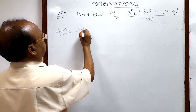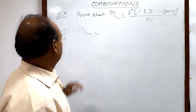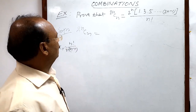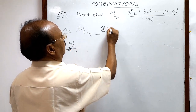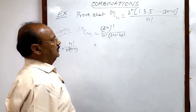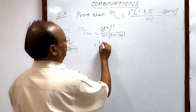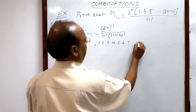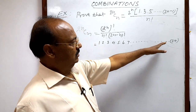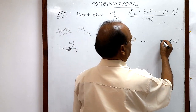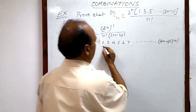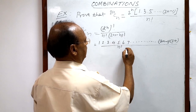Here 2nCn will be written using the formula nCr = n factorial divided by r factorial into (n minus r) factorial. So accordingly, 2nCn can be written as (2n) factorial divided by n factorial into (2n minus n) factorial. And this 2n factorial is 1 into 2 into 3 into 4 into 5 into 6 into 7 up to 2n, and the factor previous to 2n will be (2n minus 1). In the denominator we have n factorial, and (2n minus n) is also n factorial.